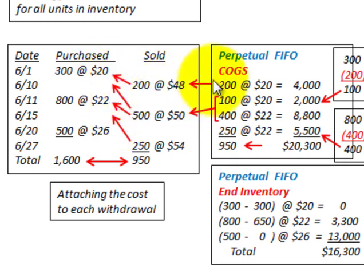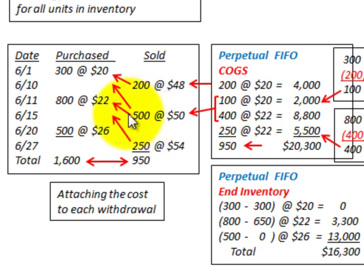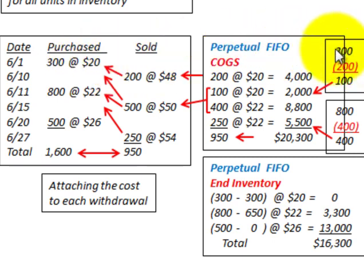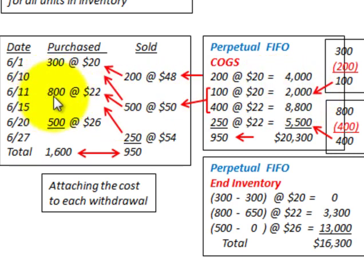For our cost of goods sold using perpetual FIFO: we sold 200 units coming out of the oldest inventory of 300 at $20 a piece — so 200 at $20 gives us $4,000. For the next sale of 500 units: we had 300 originally in the oldest quantity but used 200, leaving 100 remaining. So 100 units come out of the oldest amount at $20 for $2,000, and the remaining 400 come out of the next oldest 800 units at $22 a piece, giving $8,800.